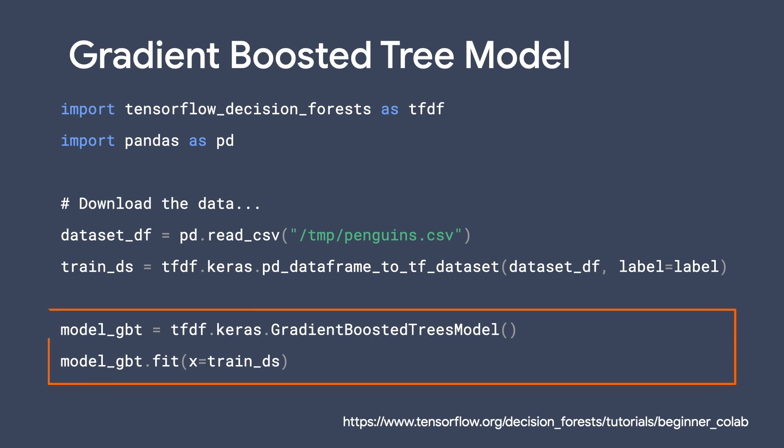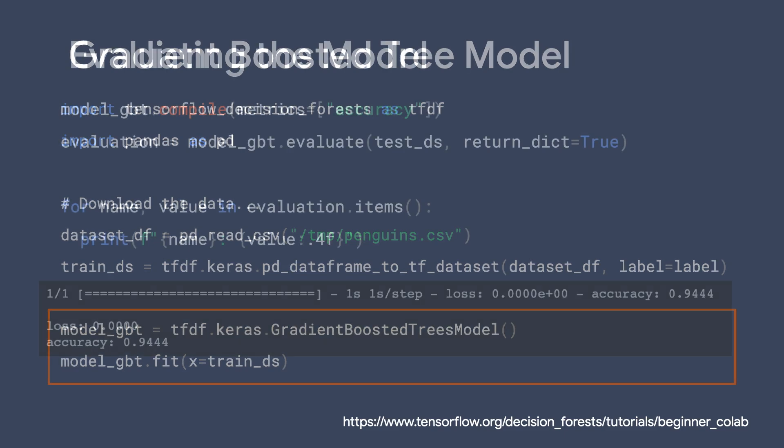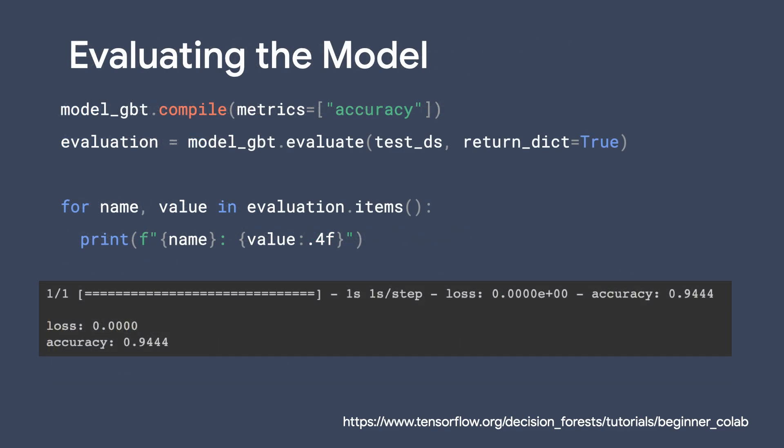The main change is just which class we use to create the model. Everything else is exactly the same. Having this API makes it very easy to try different algorithms. Evaluating our newly trained model gave us some good results already, using only the default parameters.